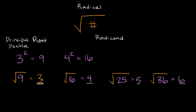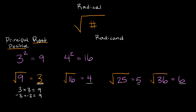The reason I'm pointing this out is because you might convince yourself that your answer could be negative 3 also, because we're saying: what number times itself is equal to positive 9? Well, 3 times 3 is equal to positive 9, but negative 3 times negative 3 is also equal to positive 9. So you might ask: can't my answer be negative 3 also? And the answer is no. Whenever you're taking the square root of a number, we're only looking for the positive root — the principal root. So we're only looking for the positive number.